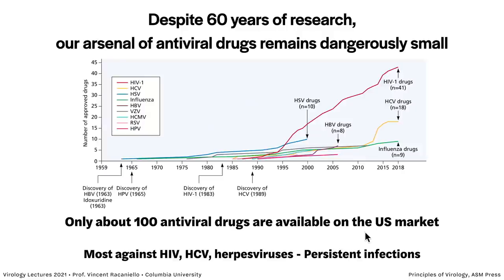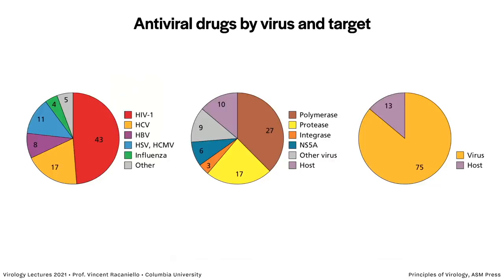Most antiviral drugs are against HIV, hepatitis C virus, and herpes viruses — viruses that cause persistent, long-term infections. One key takeaway: it's a lot easier to develop drugs for viruses that cause long-term infections than acute infections. Why? Because you have a lot of time to diagnose and treat, and since patients are infected for life, you can treat for a long time. Here's a breakdown of antivirals by virus and target: HIV has 43, the most, followed by hepatitis C virus, then herpes viruses.